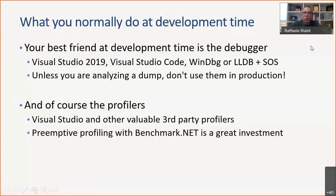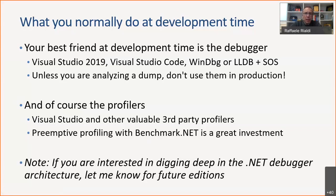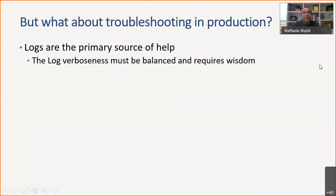There are things you can do — I work a lot in the .NET debugging infrastructure, which is a different topic covering how to build a debugger, DSLs, and code generation. But what about troubleshooting in production? You start with logs, and logs are super important, but they must be balanced — not too much, not too few. There are many discussions about this because it depends on what information you want to log.